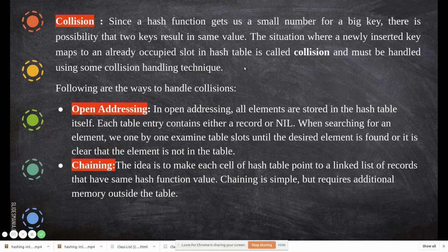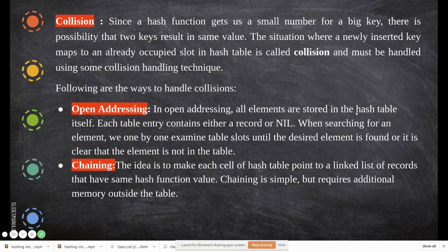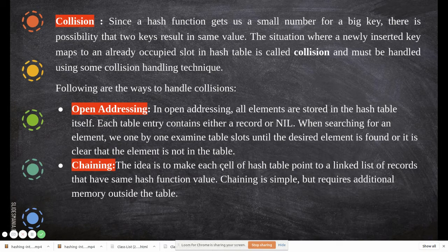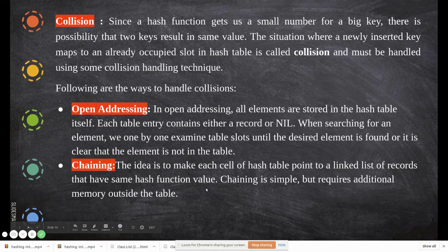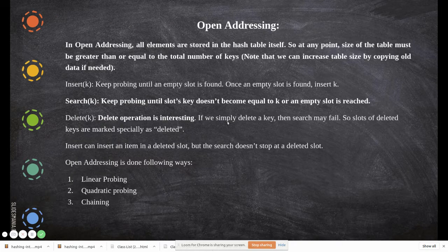Collision must be handled using some collision handling technique. There are two ways to handle collisions: open addressing and chaining. In open addressing, all elements are stored in the hash table itself — each table entry contains either a record or is empty. When searching, we examine table slots one by one until the element is found or confirmed absent. In chaining, each cell of the hash table points to a linked list.